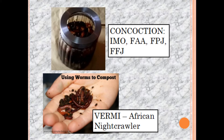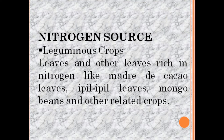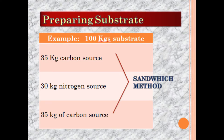The purpose of the concoction is to induce microorganisms into the substrate so that we can produce compost material in a shorter time. For carbon sources, we have animal manure including rabbit, horse, cow, and chicken droppings. For nitrogen source materials, we can use monggo bean waste, string bean waste, madre de cacao leaves, apple leaves, and grasses.